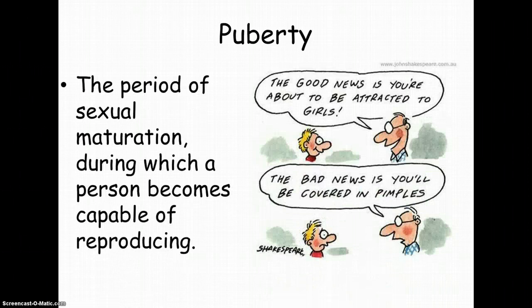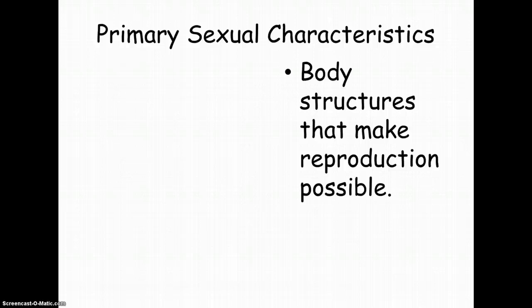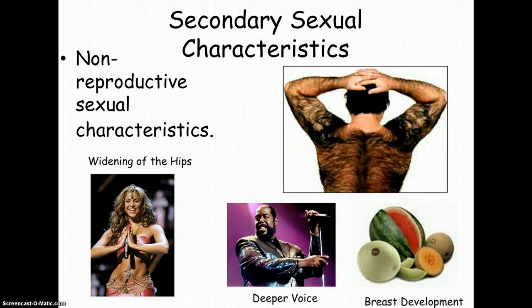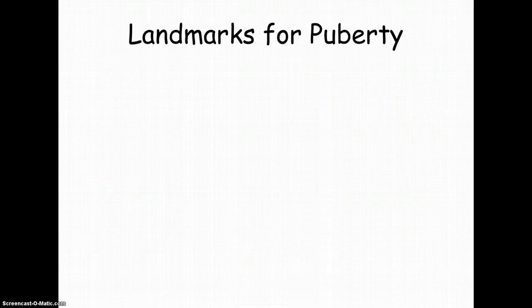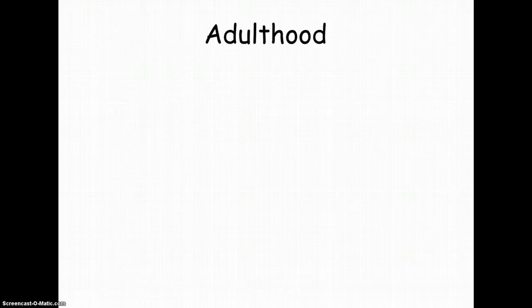Here's puberty. Primary sexual characteristics develop during puberty — the body structures that make reproduction possible begin to form. Then there are secondary sexual characteristics: females experience widening of the hips and breast development; males develop a deeper voice and body hair. Then we have landmarks for puberty and adulthood.